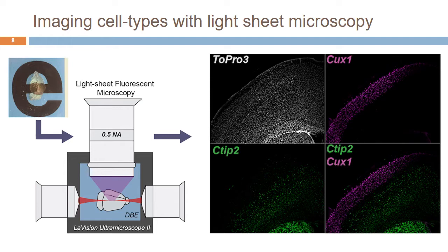Here's an example of taking pictures of nuclei. This stain marks all the nuclei in the brain. This stain marks only a subset of proteins — it's called CUX1, found only in upper layer neurons. CTIP2 is a stain found only in lower layer neurons in the cortex. Here they are on the same image. This allows us to image where every cell is in the brain, where only certain subtypes of cells are, and then compare between wild type and knockout brains.